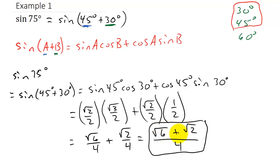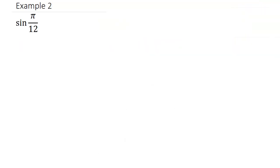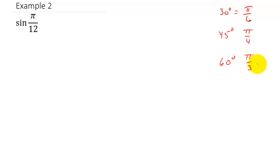Don't make the mistake of adding these and putting square root of 8, because you can't add those — you don't have the same number under the radical sign. Now let's look at one more: we have the sine of pi over 12. Remember the angles we know: 30 degrees is pi over 6 in radians, 45 degrees is pi over 4 in radians, and 60 degrees is pi over 3 in radians.